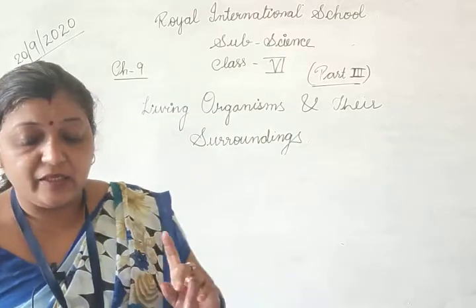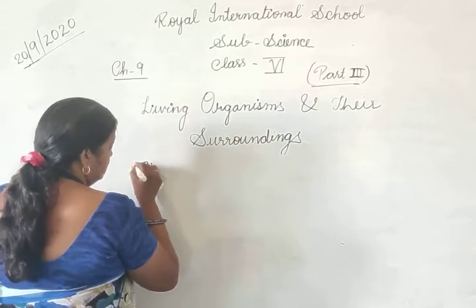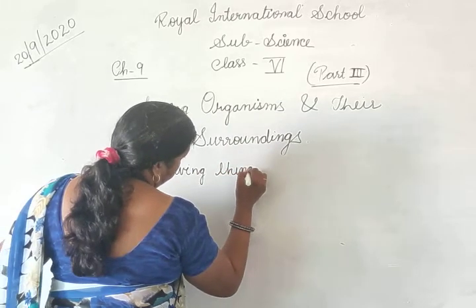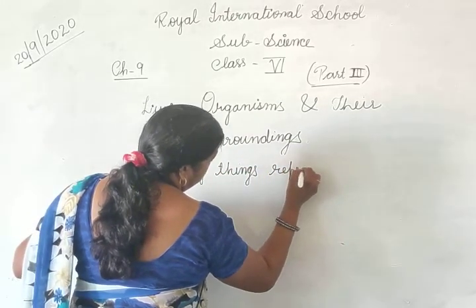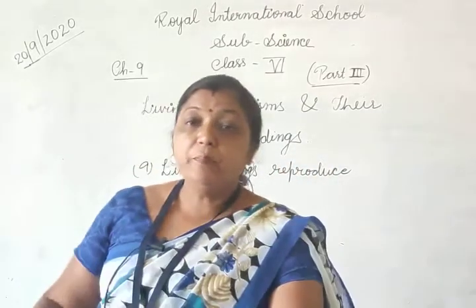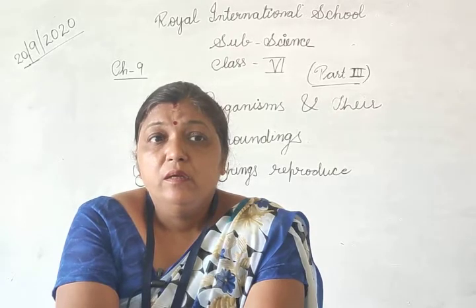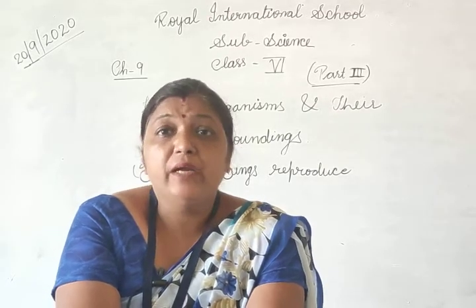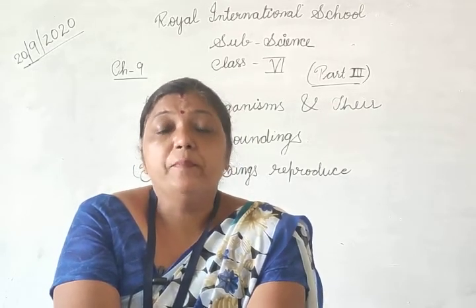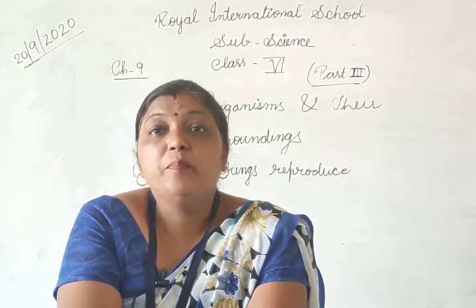Now let us start the 9th character. Living things reproduce. What is reproduction? Reproduction kya hota hai? All living organisms produce their own kind of young one. That is known as reproduction. Jitne bhi living organisms hote hain, woh apne jaisa ek young one produce karate hain. Usko hum kehte hain reproduction.